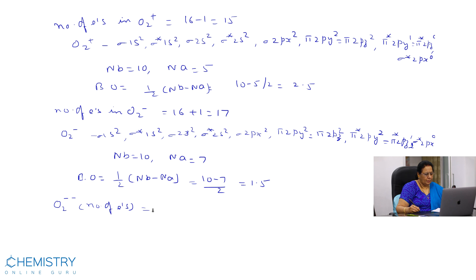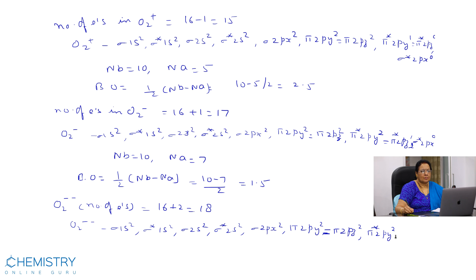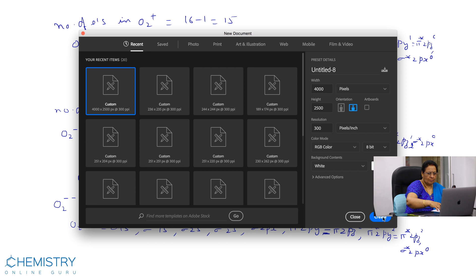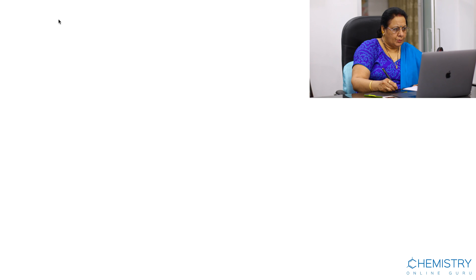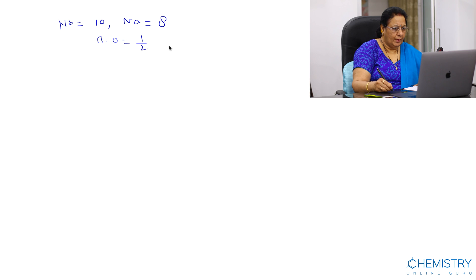For O2(2-), the number of electrons is 16 plus 2, equal to 18. Bonding electrons equal 10 and anti-bonding electrons equal 8. Bond order equals (1/2)(Nb - Na) = (10 - 8) / 2 = 1.